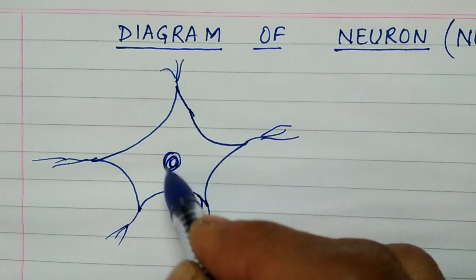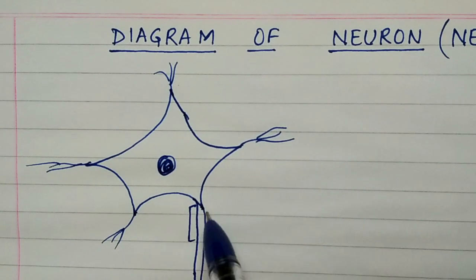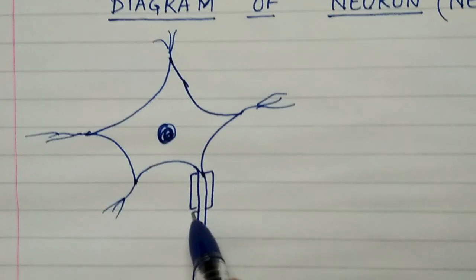We call them as nerve endings. Now in the center there is the nucleus and now children we have to make small boxes on the two sides.